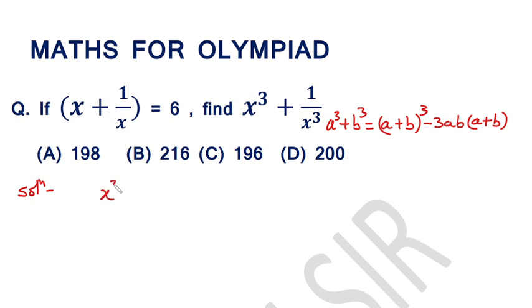x cube plus 1 over x cube is equal to x plus 1 over x whole cube minus 3 into x into 1 over x into x plus 1 over x.